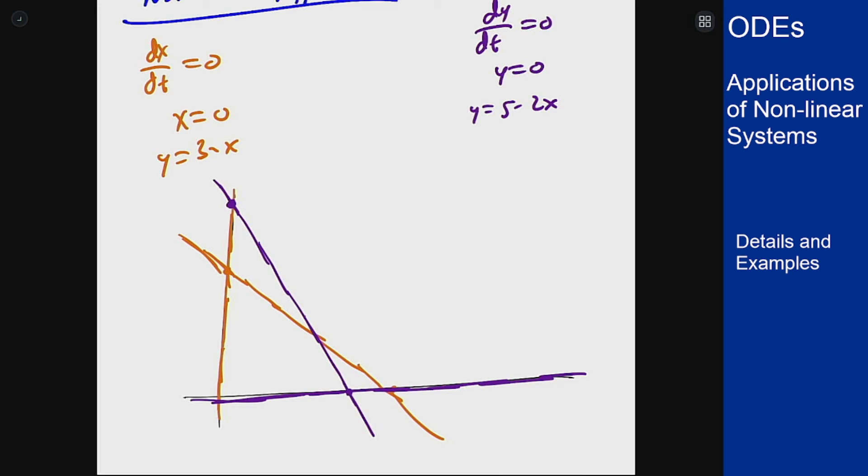Let's look at this bottom quadrant here. We're at say the point 1,1. That'll be in this region because it'll be somewhere right over here. And at 1,1 this is positive and this is positive. So we have both rates positive. That's going up this way.